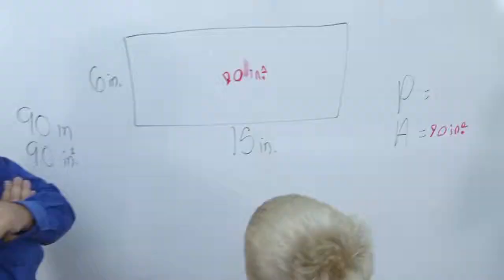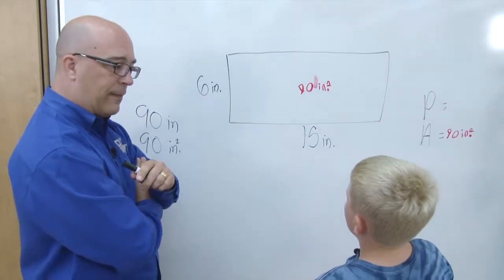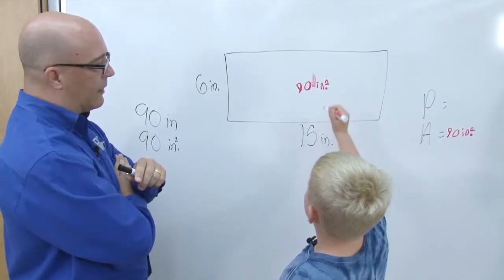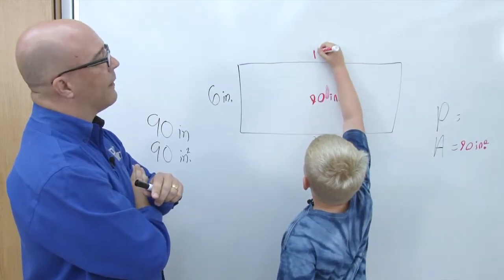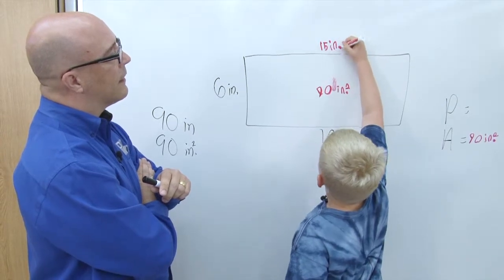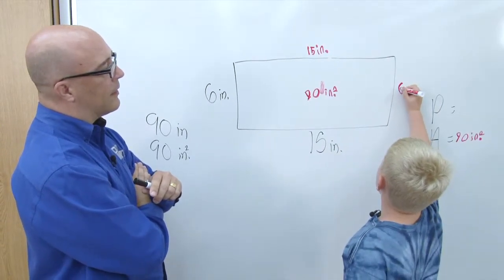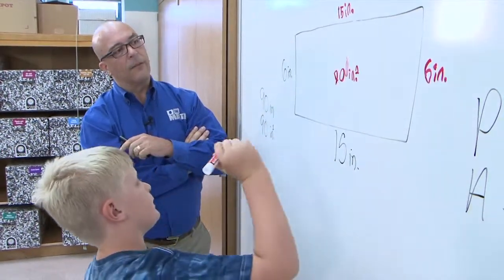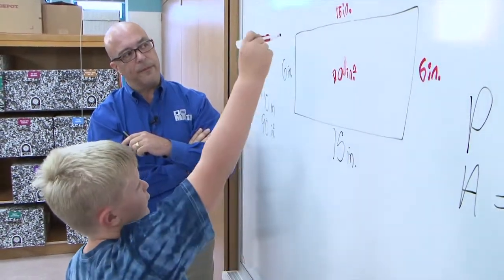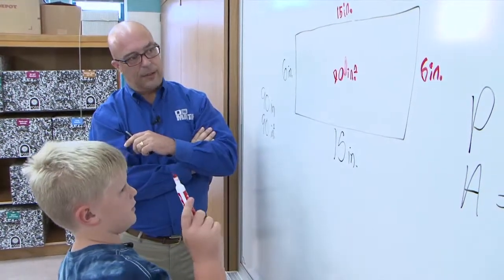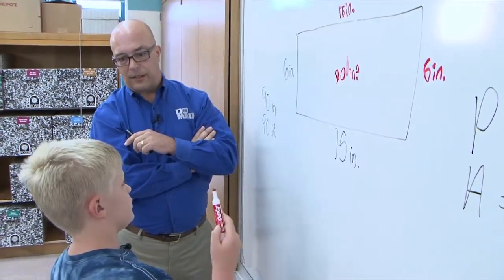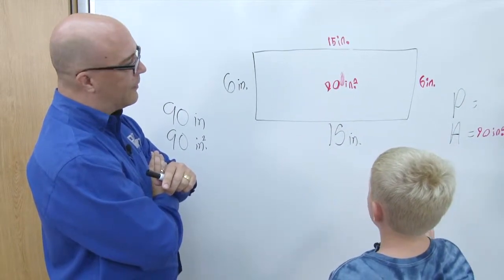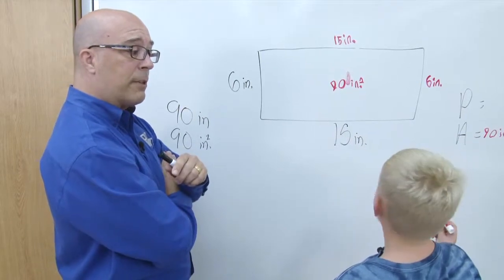And now we need to do the perimeter. So how would you like to figure out the perimeter? Well, since I know that the perimeter is this, this goes up here also, and this goes over here. Very nice. And then you just add them all up. I start with 15 plus 15 because I already know that is 30, and then 6 plus 6 is 12, so 30 plus 12 is 42. Good, so the perimeter is 42.